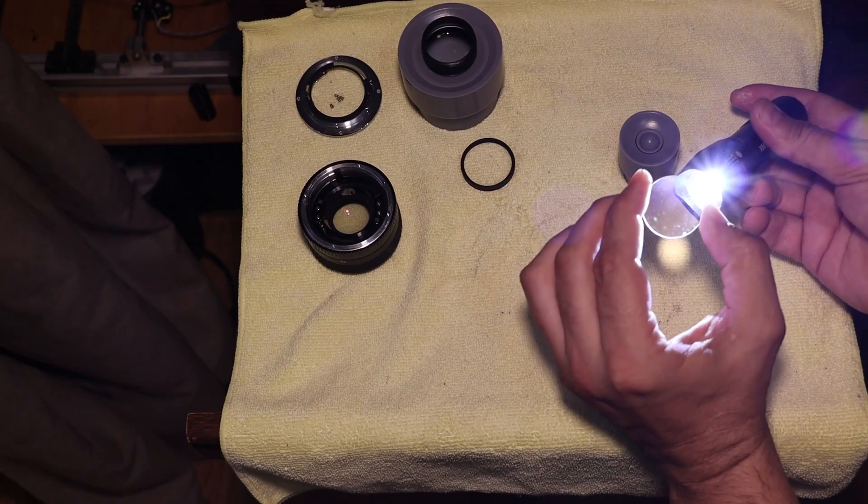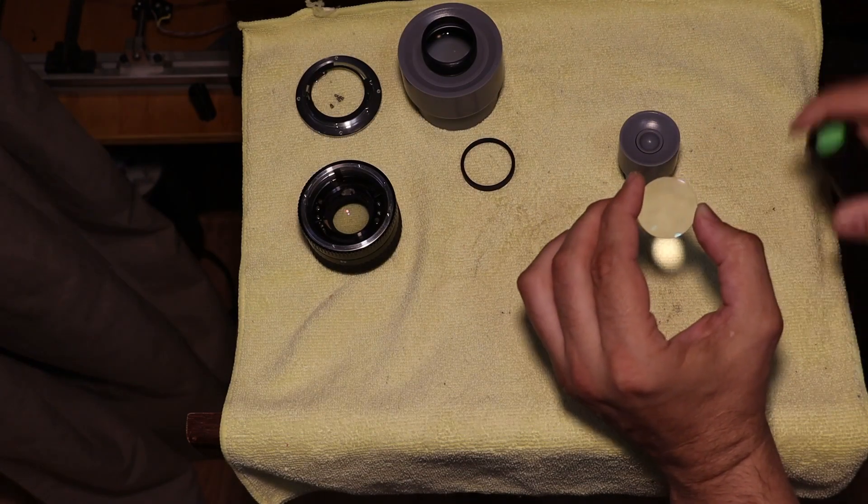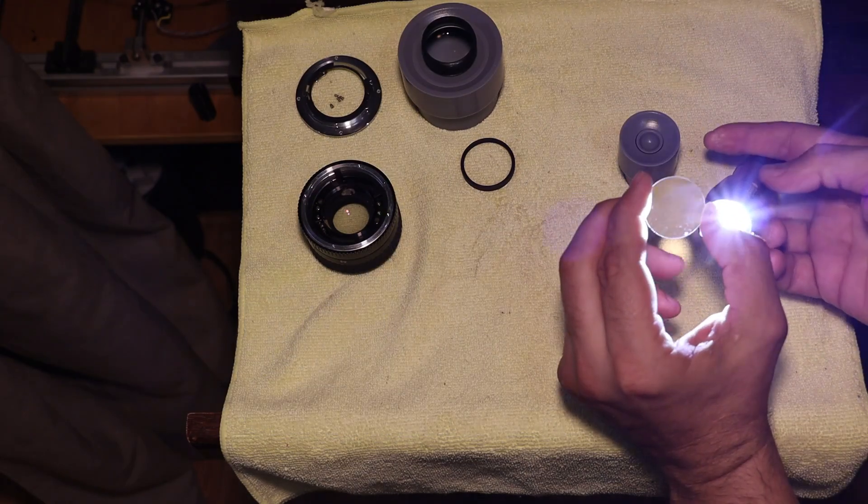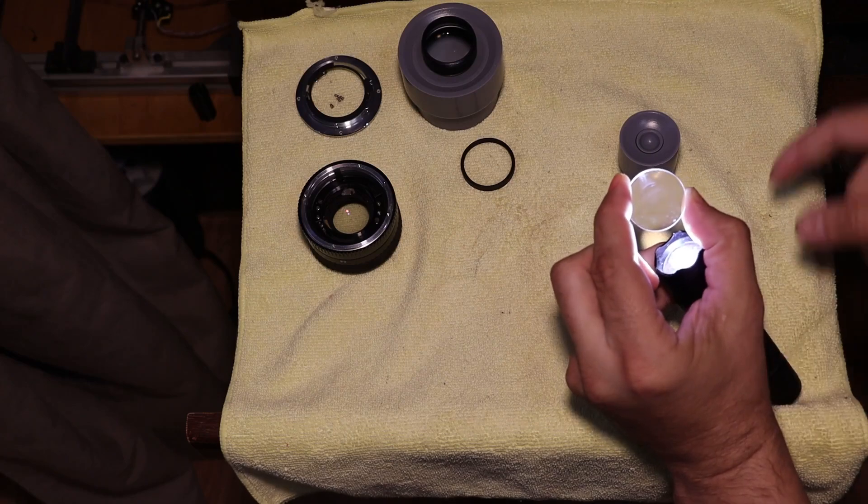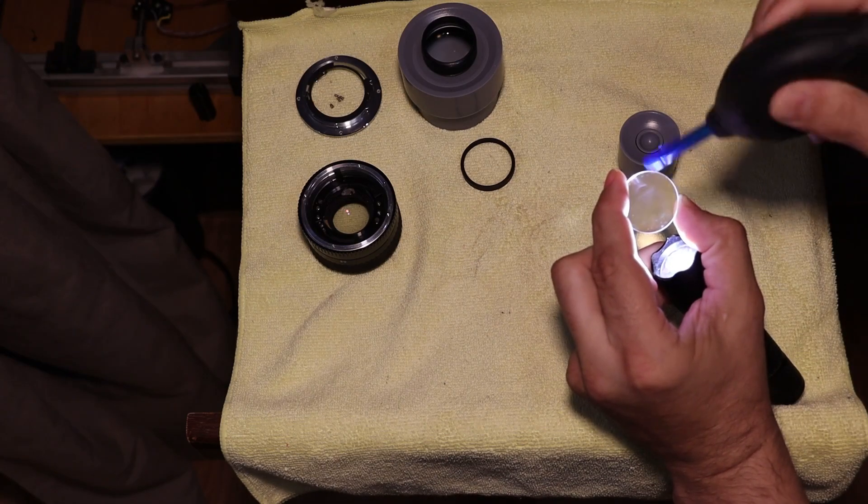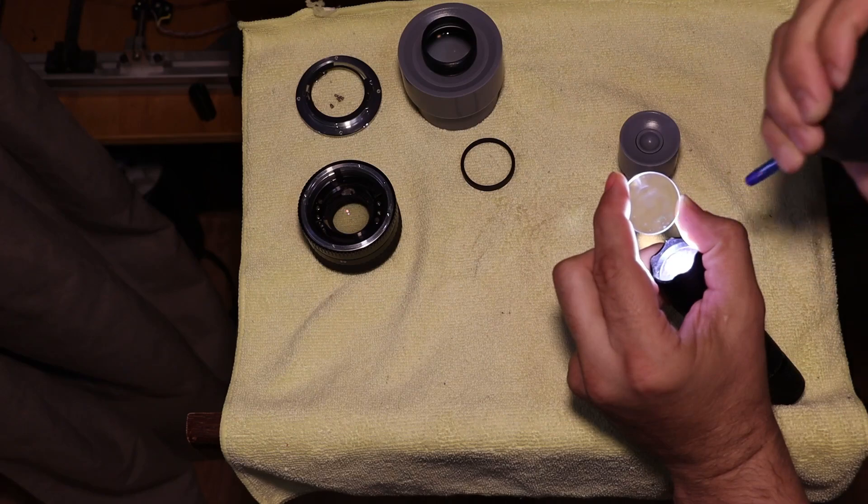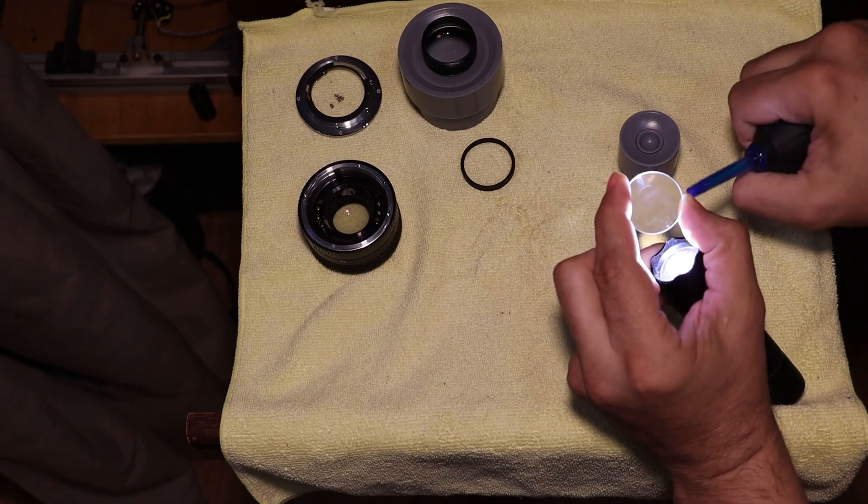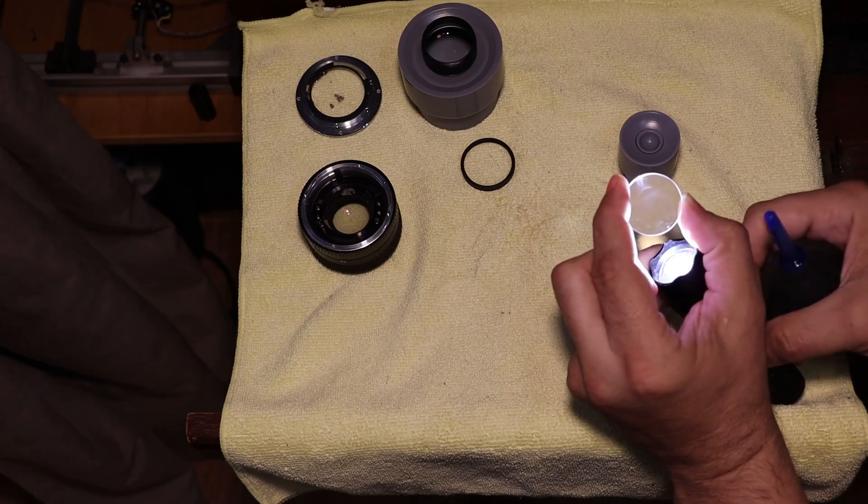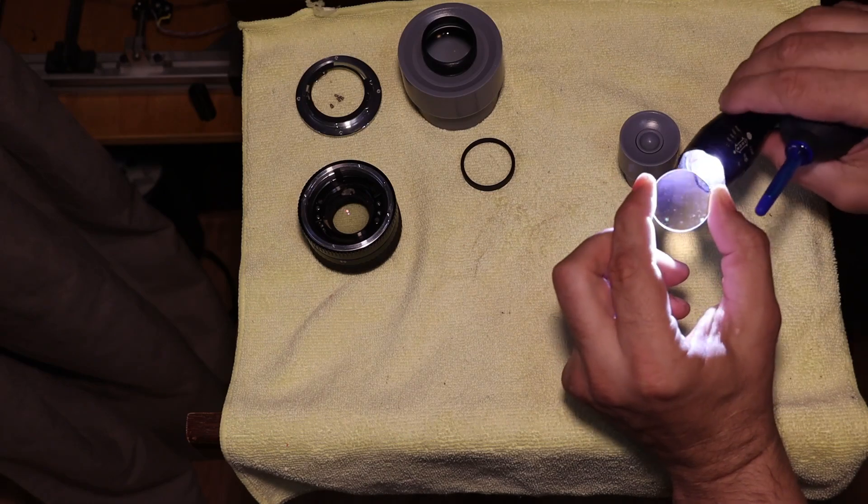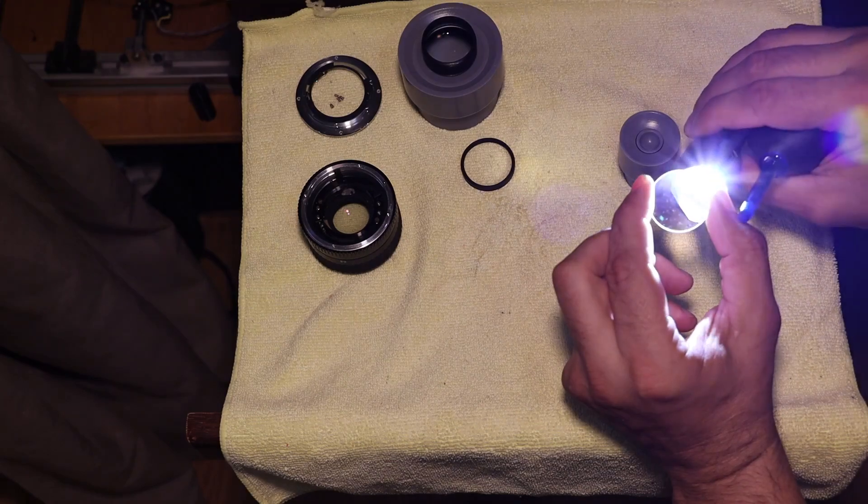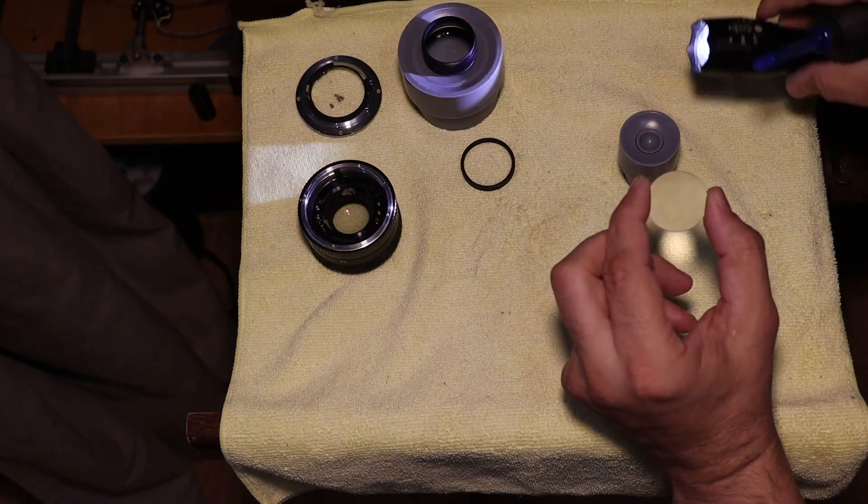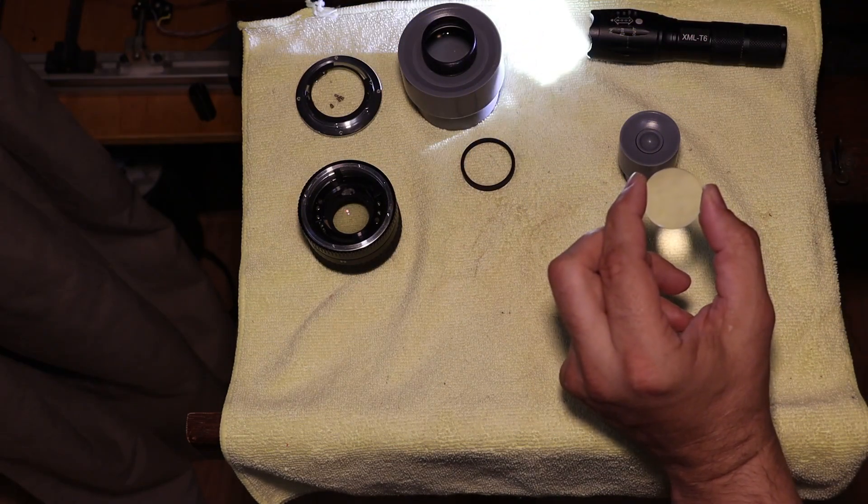It's a Yashica 50mm f1.4. The rear element had a little bit of mold on it, so I've cleaned away the mold. I've tried using a bunch of different chemicals. Here's the rear element I'm showing here, that's the one that's problematic.